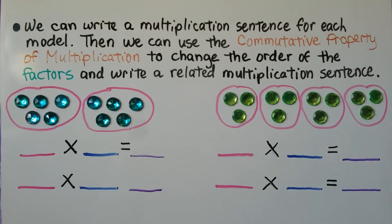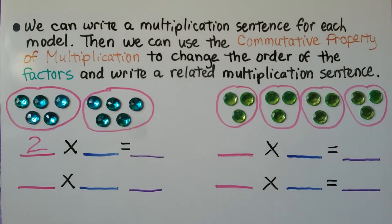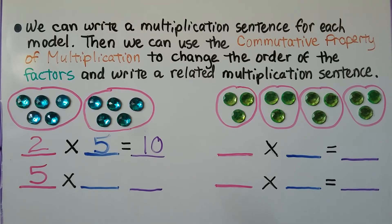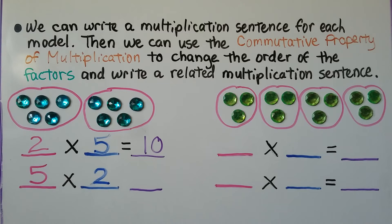We can write a multiplication sentence for each model, then use the commutative property of multiplication to change the order of the factors and write a related multiplication sentence. For this model, we have 2 groups with 5 in each group. 2 times 5 is equal to 10. We changed the order of the factors, so we put the 5 first, and the missing factor is 2. 2 times 5 is equal to 10, and 5 times 2 is equal to 10. We changed the order of the factors, and the product remained the same.